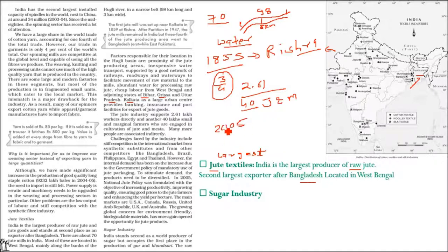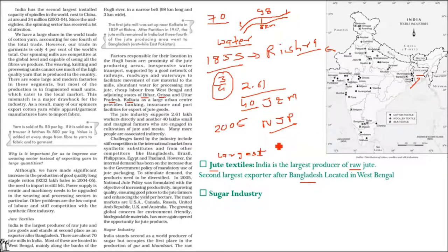The government formulated the National Jute Policy in 2005 with the objective of increasing production of jute, improving quality, ensuring farmers get good prices, and enhancing production per hectare. Main markets for jute are USA, Canada, Russia, United Arab Republic countries, UK, and Australia.